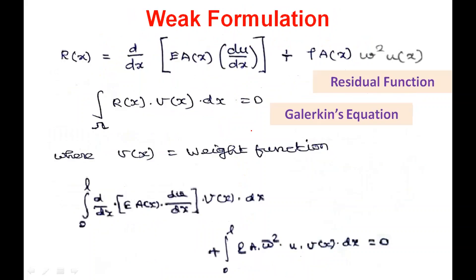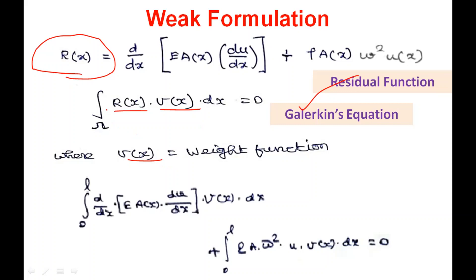Here we discuss how to convert the order of differentiation by using the weak formulation method. When we substitute any trial function into the governing differential equation, it becomes the residual function R. According to Galerkin's approach, we multiply the residual function with a weight function V, integrate this product over the domain, and equate it to 0. This is called the Galerkin equation, and it reduces the order of differentiation by half.